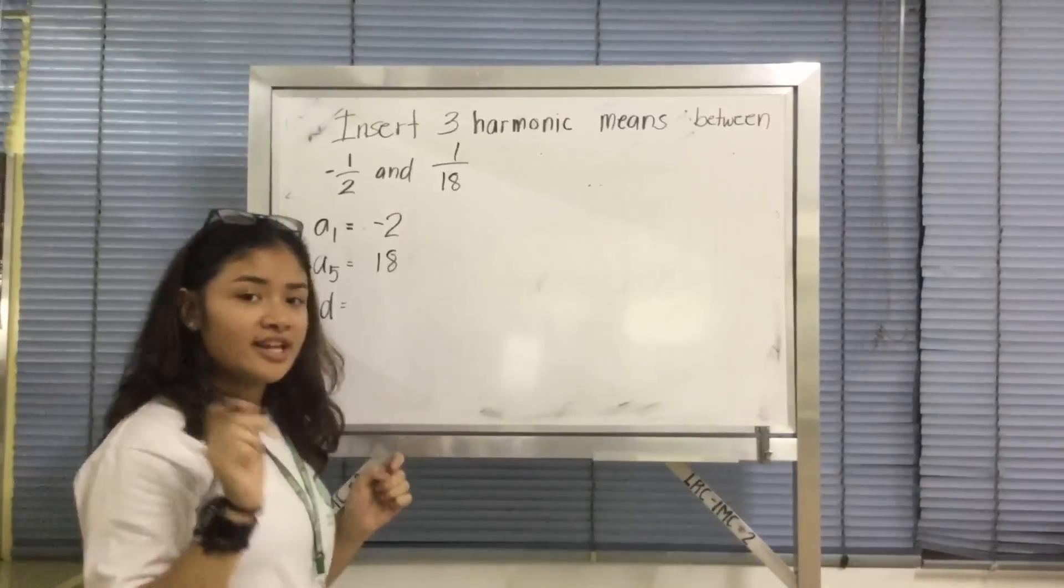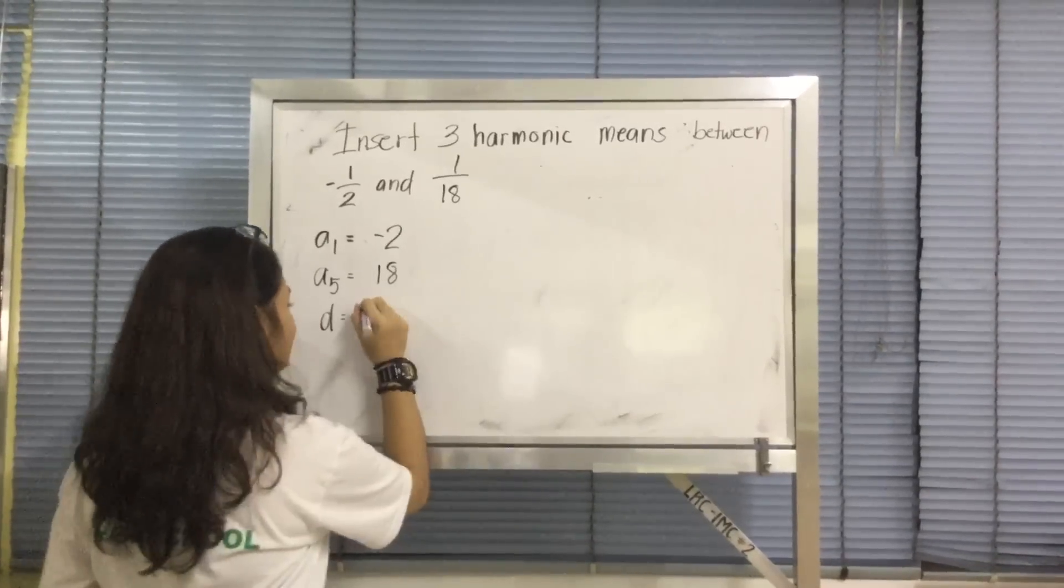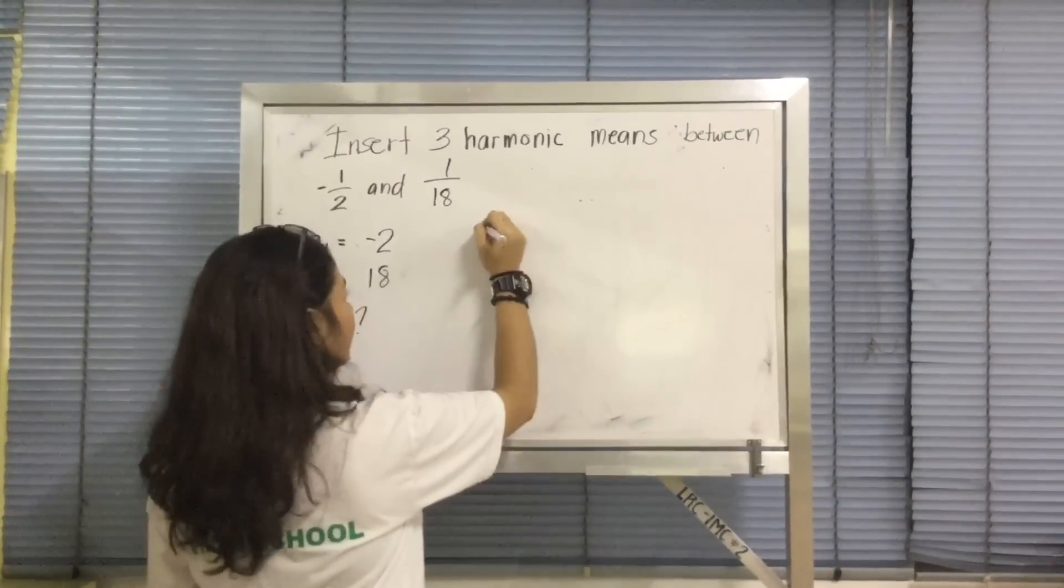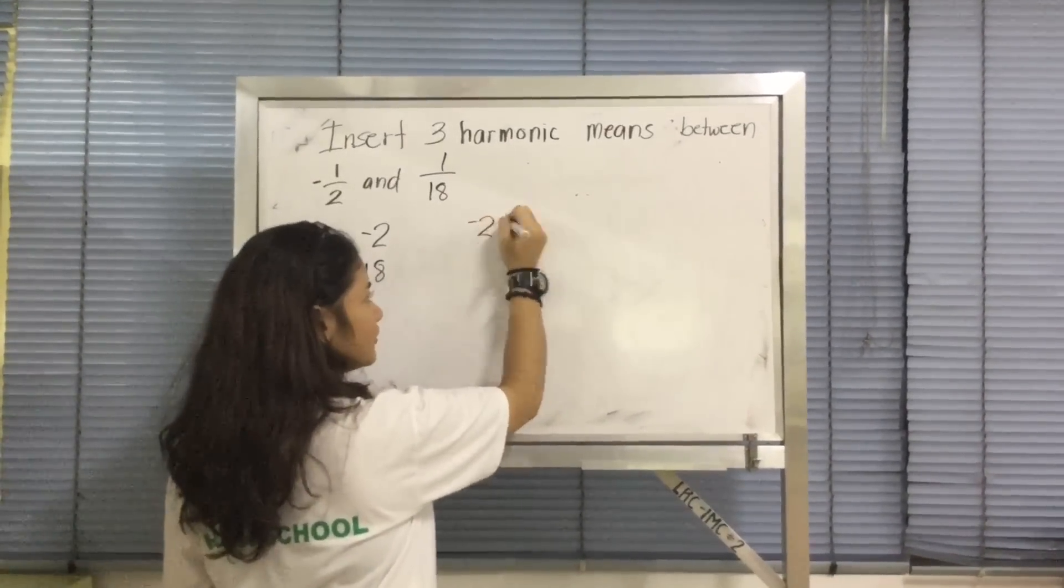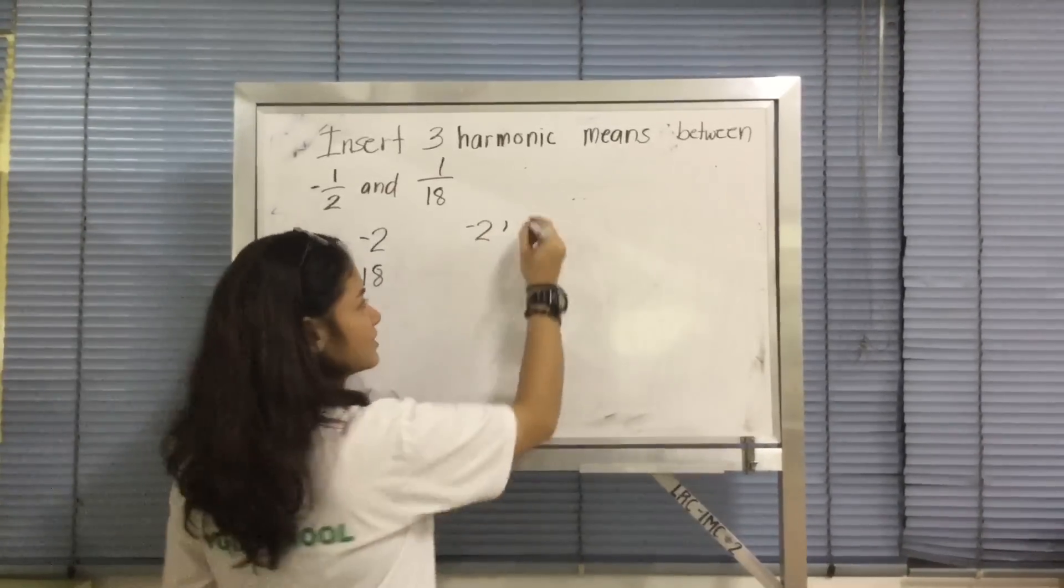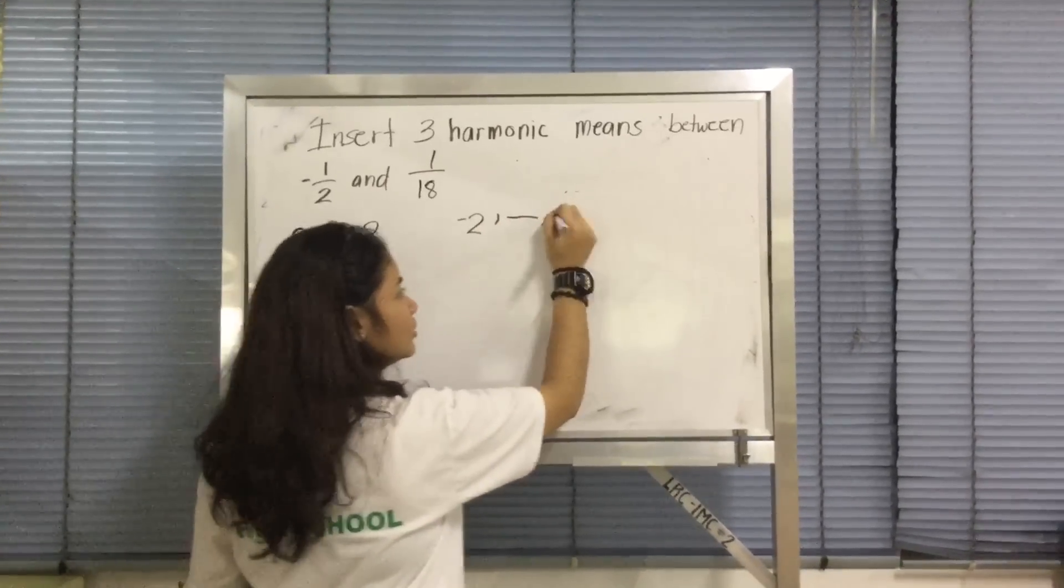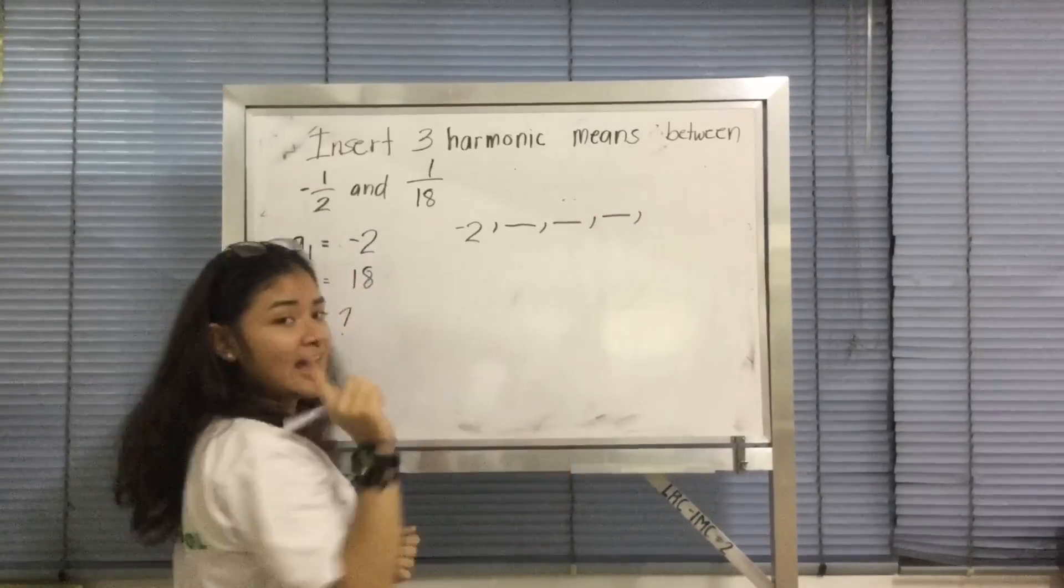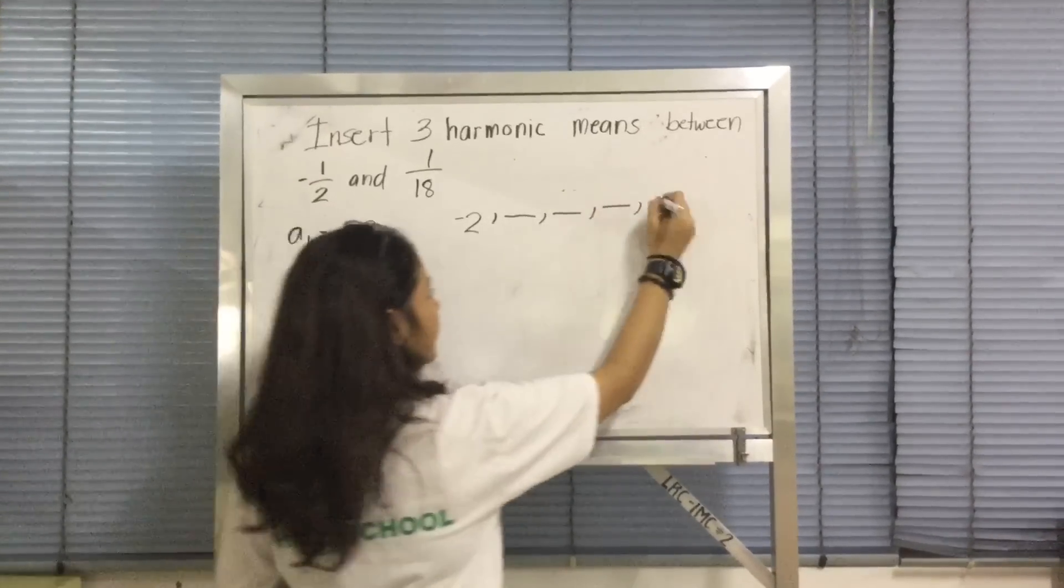a5 is 18. And your difference is question mark. So you write it this way: negative 2, insert 3 harmonic means, 1, 2, 3, and the last term is 18.